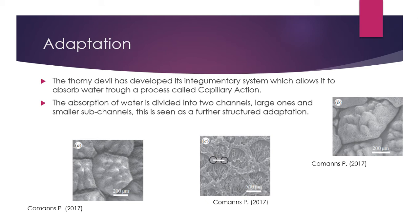Going more in-depth, this article says that there are actually two types of channels that reside in the Thorny Devil's scales: one being the large channels that have the ability to absorb large amounts of water at a quicker rate and hold large volumes, and the smaller sub-channels that are used to extend the capillary water transport. This is a remarkable adaptation, as it can absorb water from the ground without actually drinking it, and transport it through the skin to the mouth. Having these large and small channels is fascinating because it shows that even in their skin, it is more adapted to hold more water and for longer periods for storage.